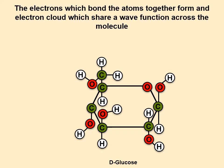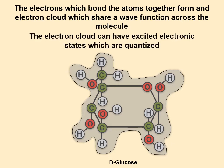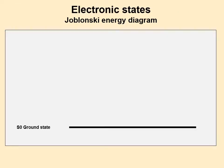So the electrons, once they're in a molecule like this, are used in the bonds and form a cloud across the entire molecule. What's interesting is there's a wave function across that electron cloud, and all the electrons share that same wave function. That electron cloud can be excited into a higher state, and those states are quantized.